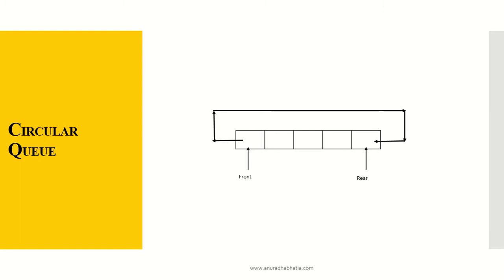This is a representation of a circular queue. If my front is here and my rear is here, both are connected in a circular fashion. This queue can sometimes be represented as a circular notation, but it becomes difficult to understand how it works. I've represented it in a normal array, which is how a circular queue is usually shown.